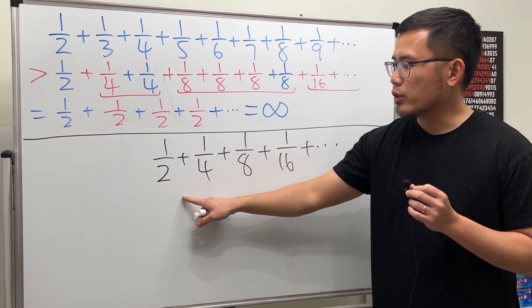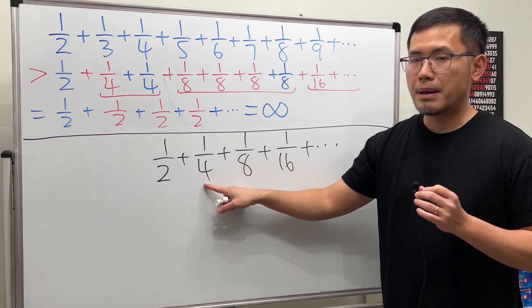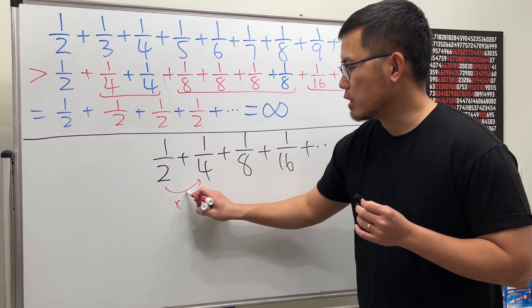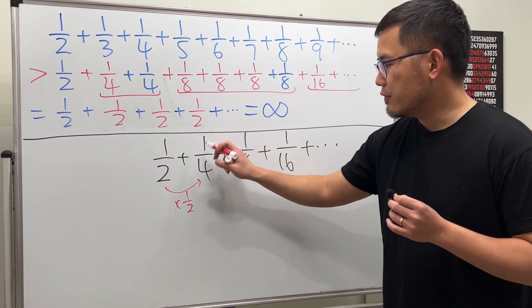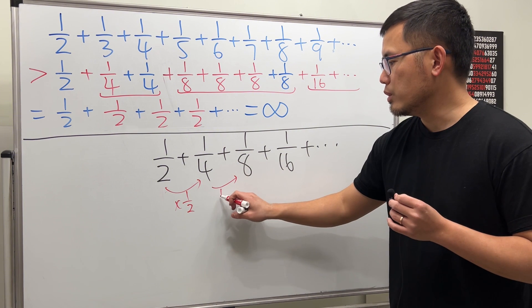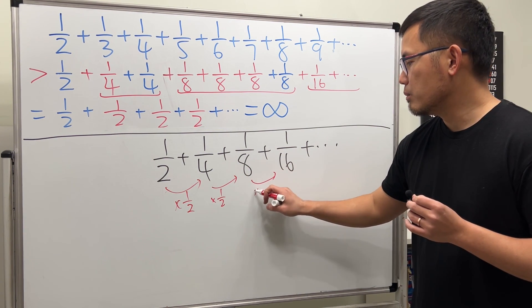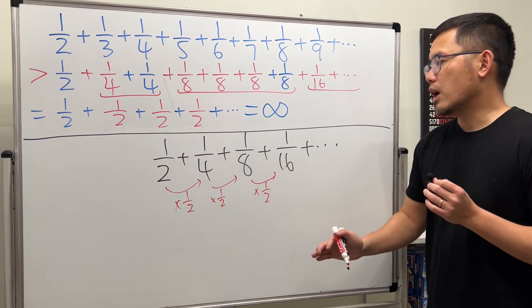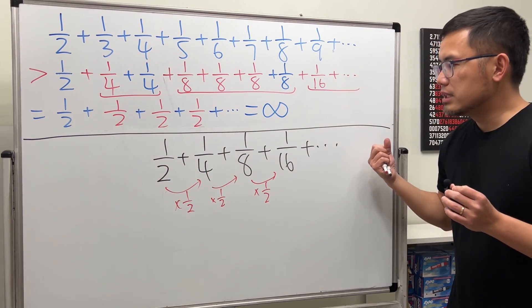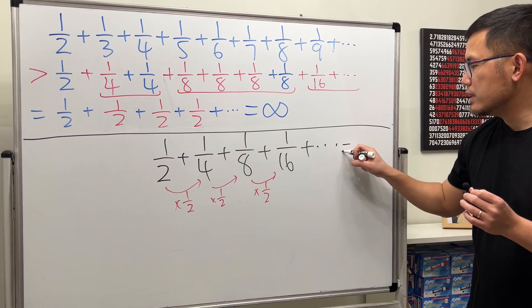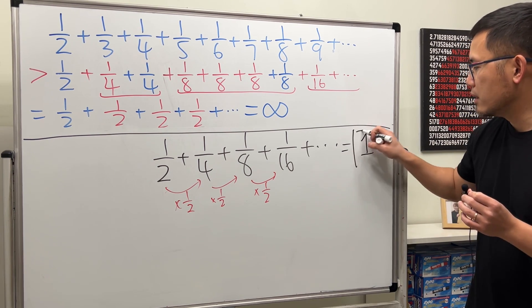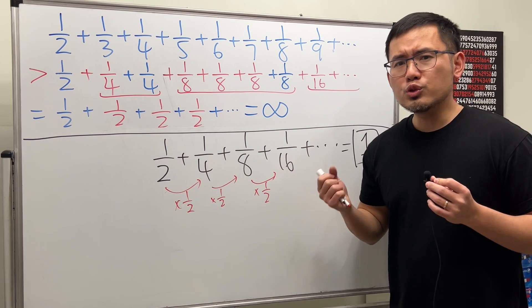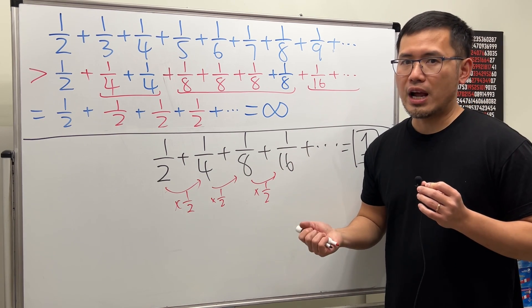Because each time we go to the next fraction, we just multiply by a common ratio. In this case, when we go from 1 over 2 to 1 over 4, we multiply by 1 half. When we get from 1 over 4 to 1 over 8, we multiply by 1 half, and so on. Well, I will tell you: when we add up all these fractions, we end up with a whole number — 1. How is this possible? Because right here, we are also adding infinitely many fractions.